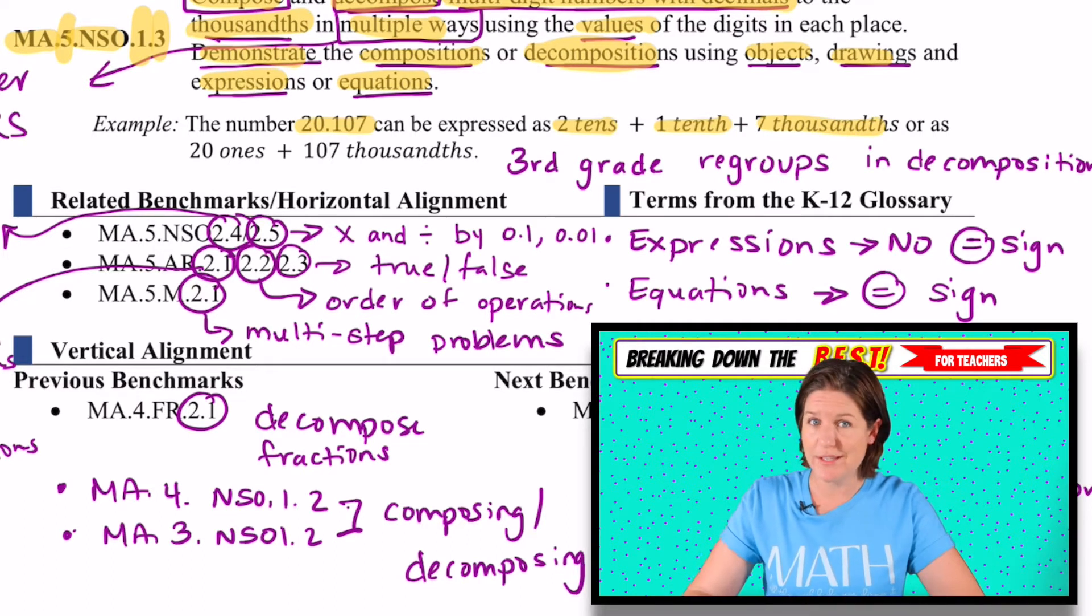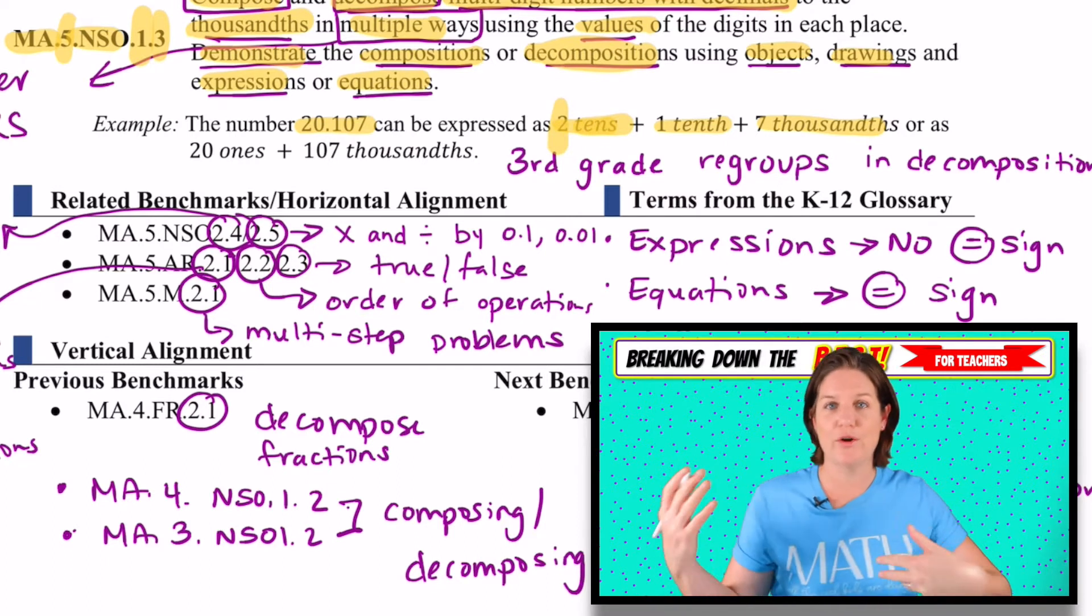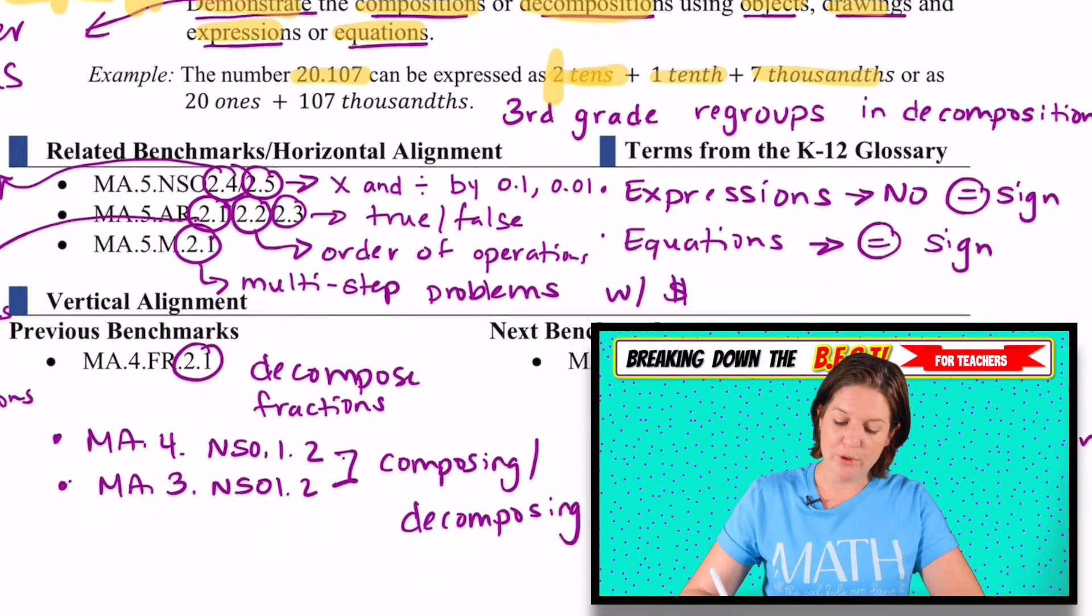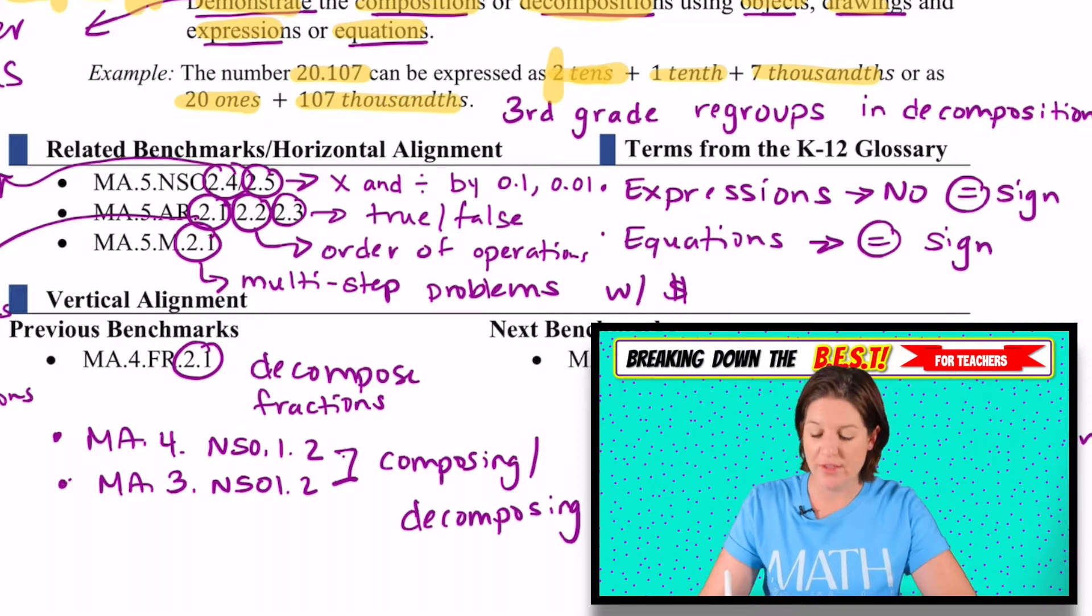So the example here says that the number 20 and 107 thousandths can be expressed as 2 tenths plus 1 tenth plus 7 thousandths. So you can see it's kind of like expanded form. In fact, a decomposition, I would say, is a form of expanded form. This is just called a numeral word form because we've got a number, the numeral, and a word. It could also be decomposed as twenty ones plus 107 thousandths.